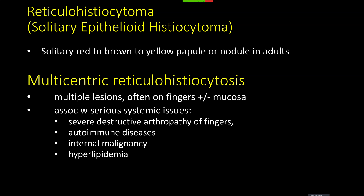In my experience, the much less common multicentric form — which we call multicentric reticulohistiocytosis — presents with multiple lesions that tend to be on the fingers and sometimes the mucosa. These patients have some significant systemic problems like destructive arthritis, autoimmune diseases, sometimes internal malignancy, lipid abnormalities, etc. So patients with multiple lesions actually need additional workup and could potentially have serious problems.